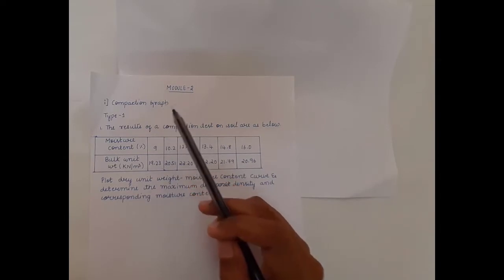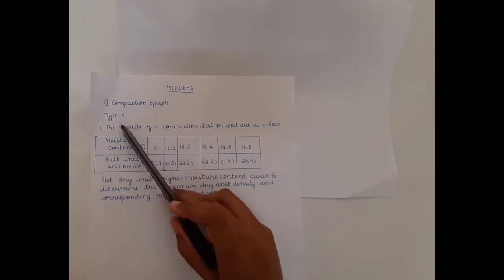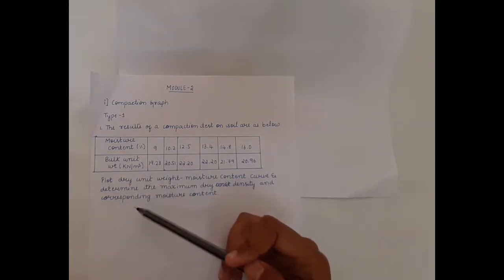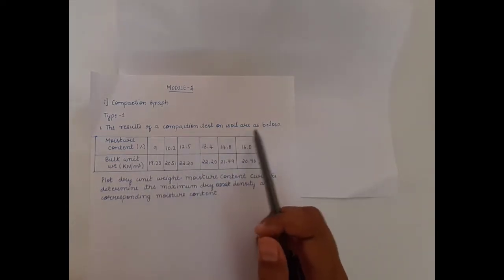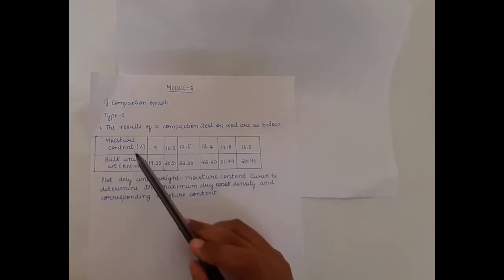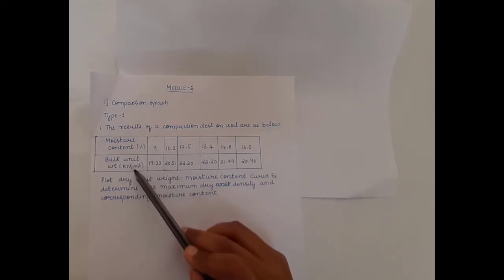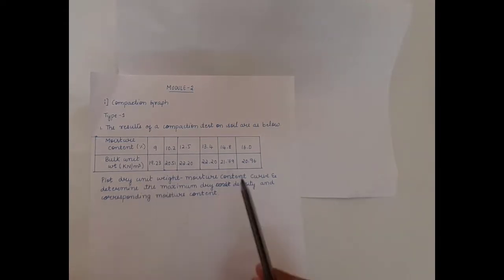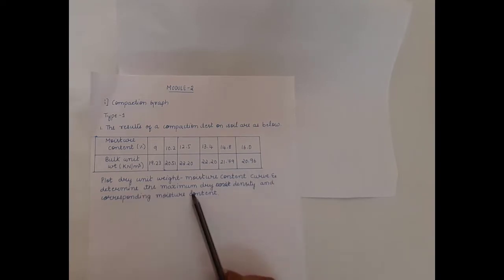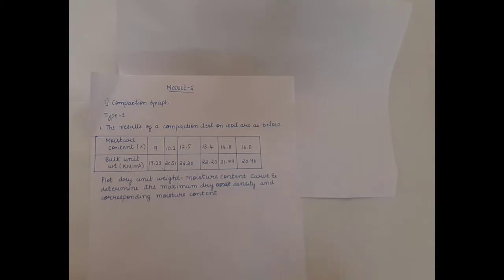In compaction you will have two types of problems. In the type 1 problem, the question is: the result of a compaction test on soil is given below. They will give you moisture content and bulk unit weight. From these two values you need to plot the graph for dry unit weight versus moisture content and then determine the maximum dry density and the corresponding moisture content.